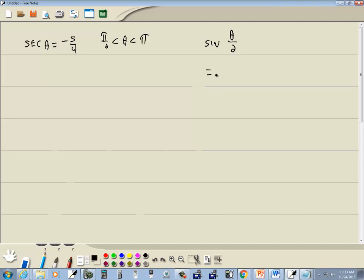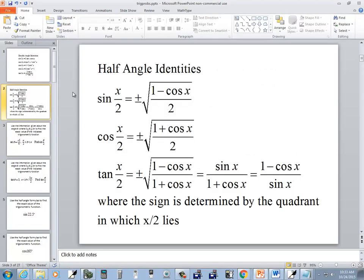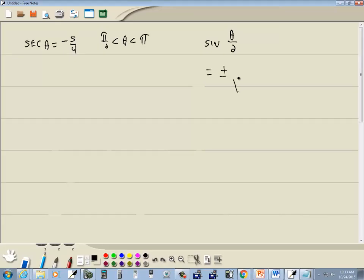First off, let's write down a formula for sine of theta over 2 that will equal to plus or minus square root of 1 minus cosine theta over 2.